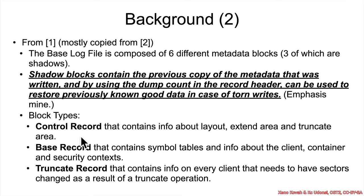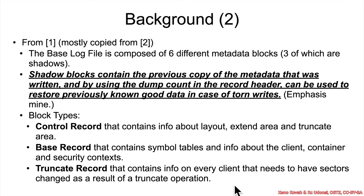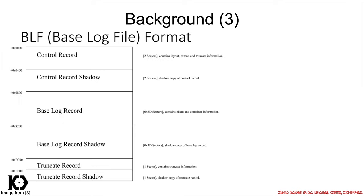The three main types are: the control record, which has information about the layout of the log file, the extend area, and the truncate area; the truncate record, which has information about the sectors that change as a result of a truncate operation — when you make the log smaller; and the base record, which has simple tables and information about security contexts.